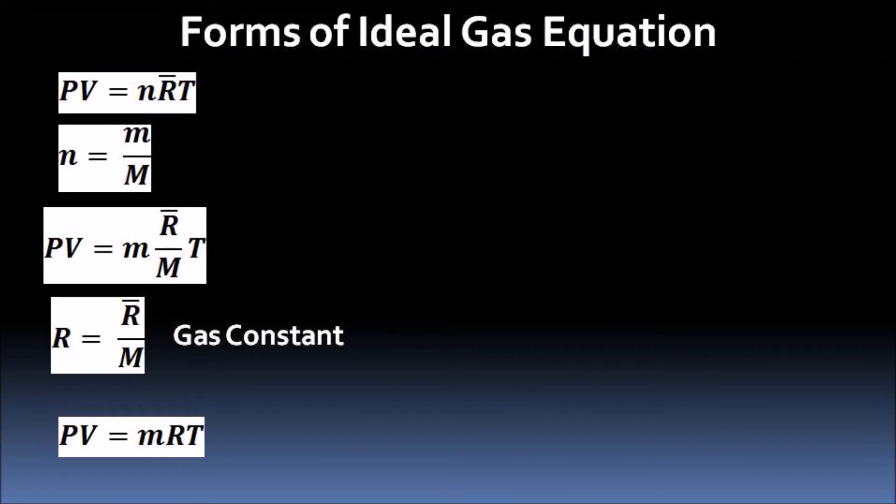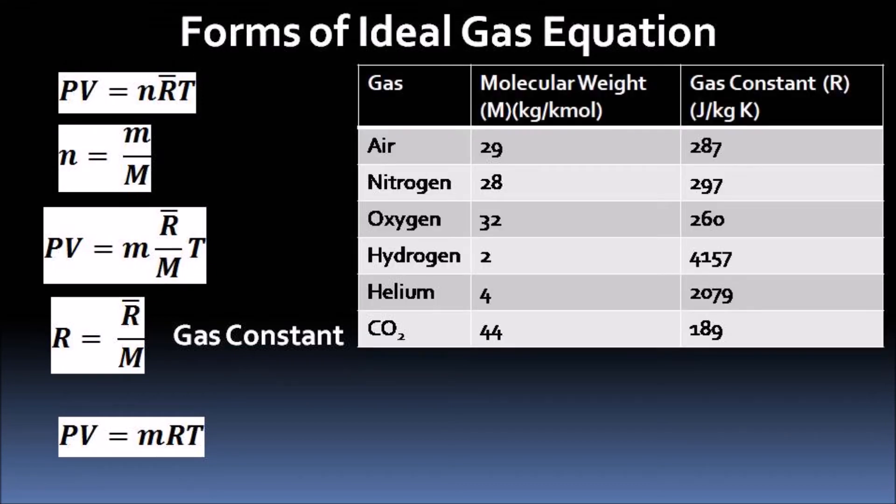In this equation, if we have the volume, pressure, and temperature of the gas, we can easily determine the mass of the gas. The values of specific gas constants for some common gases are tabulated. We can notice that the lower the molecular weight of the gas, the higher the value of the gas constant.